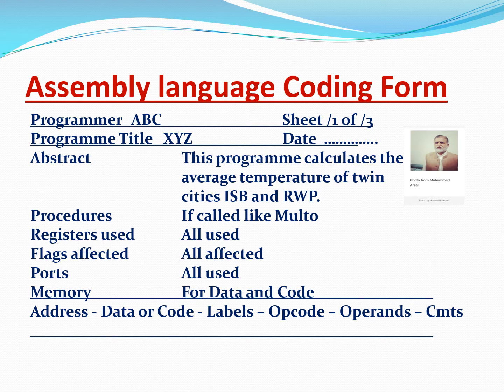In the form, the first thing is that you write the name of the programmer — say for example, programmer ABC. Then you write the sheet number of this program — say for example, sheet one of three, that is the first sheet. Then we give the title of the program, let's say XYZ, and then it is the date. Then we write down the abstract — what this program is doing. For example: this program calculates the average temperature of Twin Cities, Islamabad.